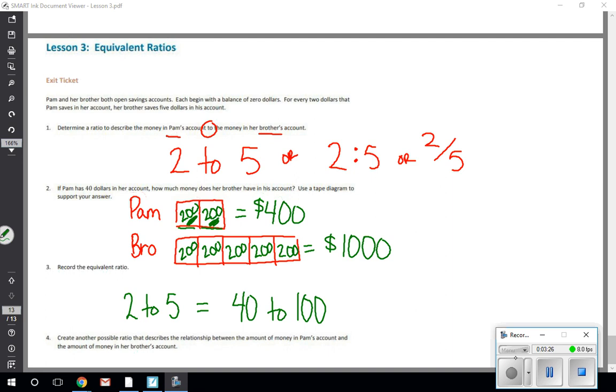As long as whatever you do to one part of the ratio, you do it to the other part of the ratio, you will find an equivalent ratio. So I could say 400 to 1,000 is equivalent. If I wanted to do another one, if I said that each of Pam's were worth just $2 apiece, two sets of two is four, five sets of two is ten. I could say that each of them is worth five, so for Pam, two sets of five would be ten, and her brother's five sets of five would be 25. So there's an infinite amount of equal ratios, just as long as you keep that constant the same. Good luck in your practice, make a difference.